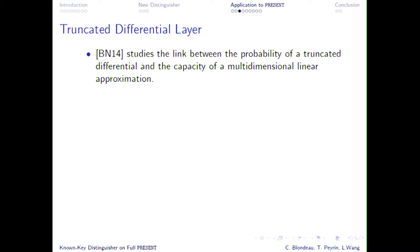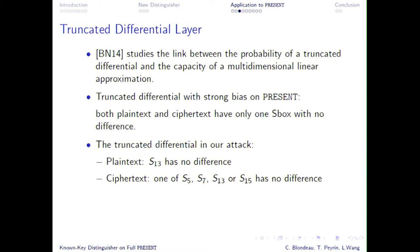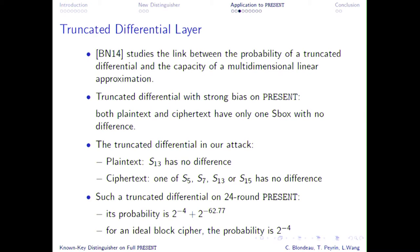The truncated differential works with just one S-box at the input with no differences, and we know that we can observe a bias on one of the S-boxes at the output — they will have no difference with a slightly higher probability than for a random permutation. This slightly higher probability is centered on 2^(−4) + 2^(−62.77), whereas for a random permutation you would expect something centered on 2^(−4). This is for 24 rounds, and from this knowledge we can define the threshold to decide whether we have PRESENT or something else.